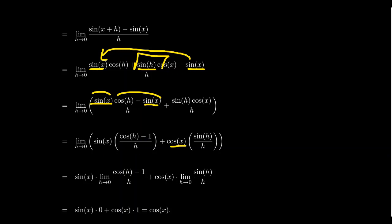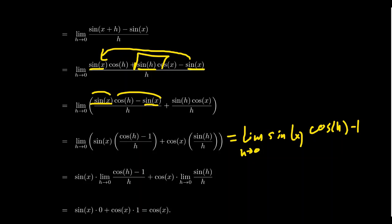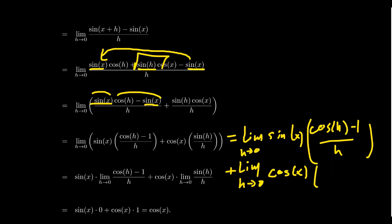We also have cosine x times sine of h. Since we have a limit of two different terms, I'm going to write this as a sum of two separate limits: the limit as h approaches 0 of sine of x times cosine h minus one, all over h; plus the limit as h approaches 0 of cosine of x times sine of h over h.